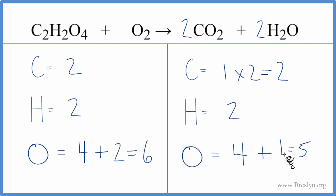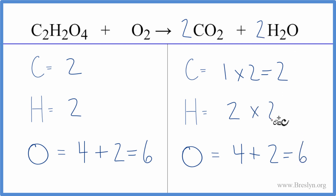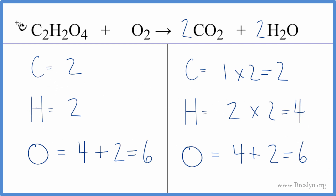Let's update the oxygens: two times two is four, plus two times one is two, so now we have six oxygens. But for our hydrogens, we have two times two — that gives us four. So it looks like we'll have to put a two in front of the C2H2O4.